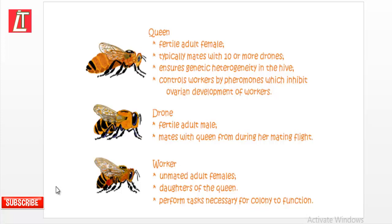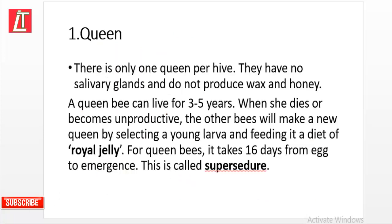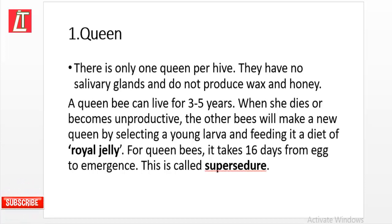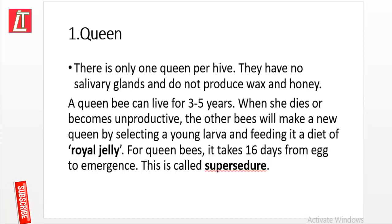There is only one queen per hive. Queens have no salivary glands and do not produce wax or honey. A queen bee can live for three to five years. When she dies or becomes unproductive, the other bees make a new queen by selecting a young larva and feeding it a diet of royal jelly. For queen bees it takes 16 days from egg to emergence.